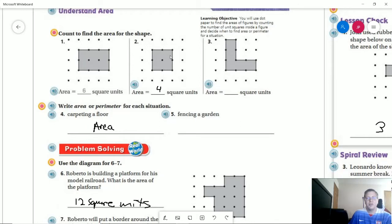So number two, we are going to have one, two, three, four square units. If we are putting carpet on a floor, we could have different size carpets, but we are going to be filling the inside of a part of a room. So we would be looking for area for that.